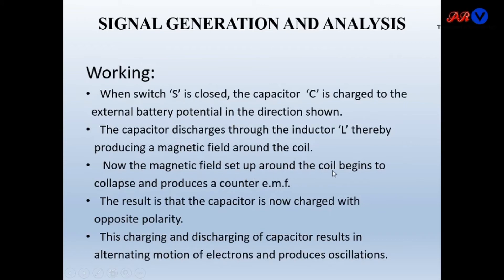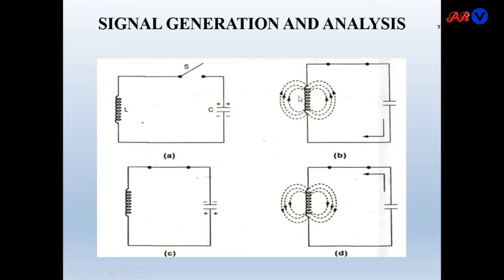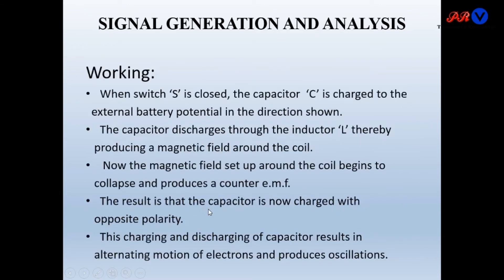The magnetic field set up around the coil begins to collapse and produces a counter EMF, transferring the electromagnetic energy back to the capacitor, where it is stored as electrostatic energy. The result is that the capacitor is now charged with opposite polarity. This charging and discharging of the capacitor results in alternating motion of electrons and produces oscillations.